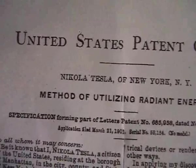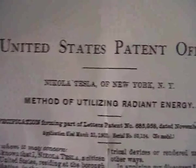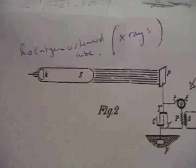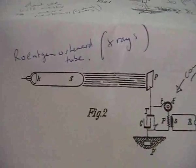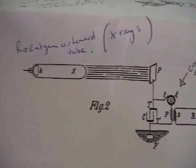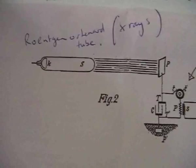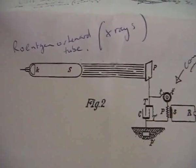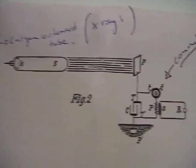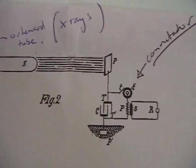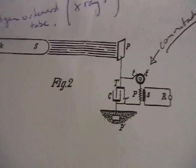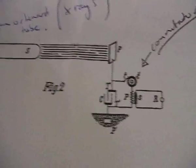I'm going to start with Tesla's patent on Radiant Energy. Okay, figure two, he shows a Roentgen or Leonard tube firing out what I'm going to say is radiant matter charging up a negative or positively charged plate, which charges up the capacitor, which then runs the circuit.